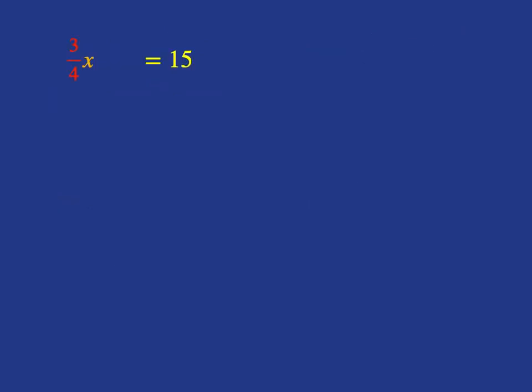Let's do one more example. If we've got 3 quarters of x is equal to 15, and we want to solve for x, we now know that what we need to do to get x on its own is multiply by 4 over 3. And that will give us 1x, which is just x on the left, and then 15 multiplied by 4 over 3. Well, again, we can cancel the 3 with a 15 and get 5, and then 5 times 4 gives us 20.